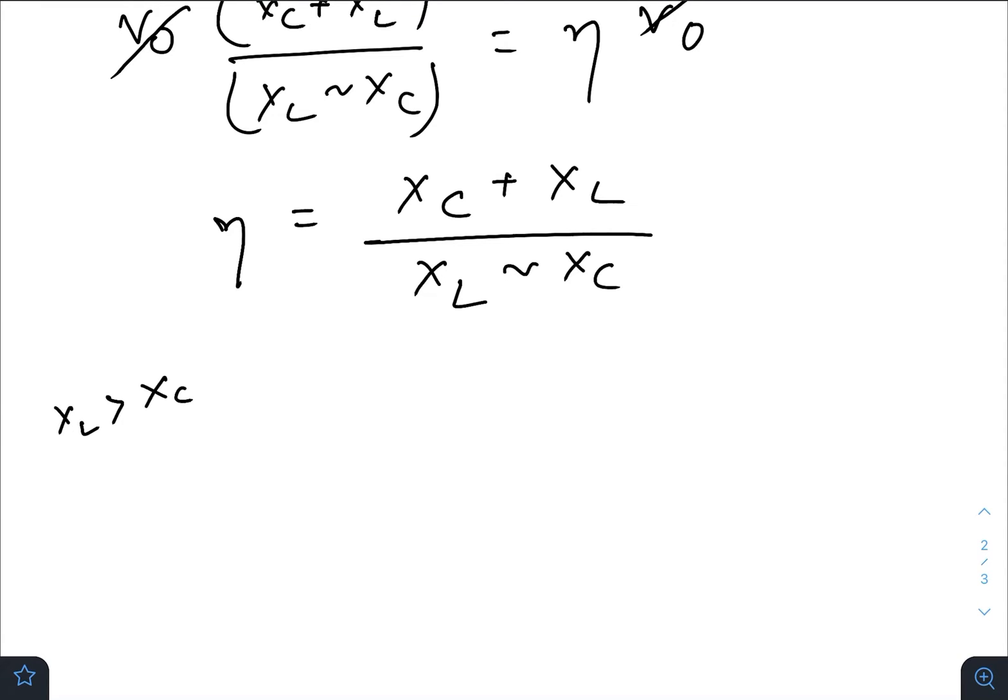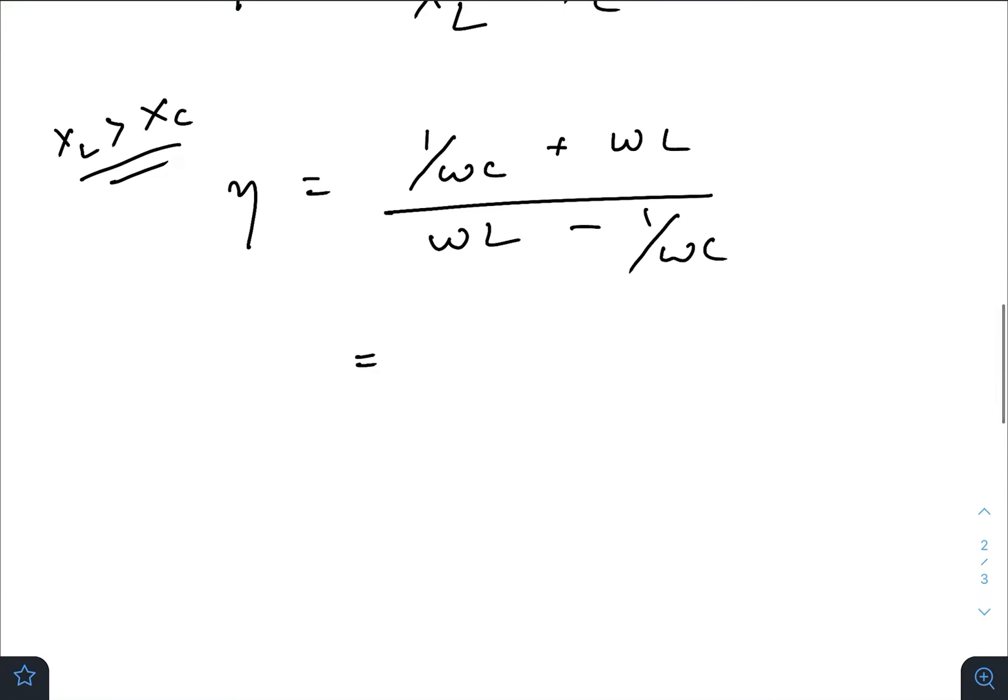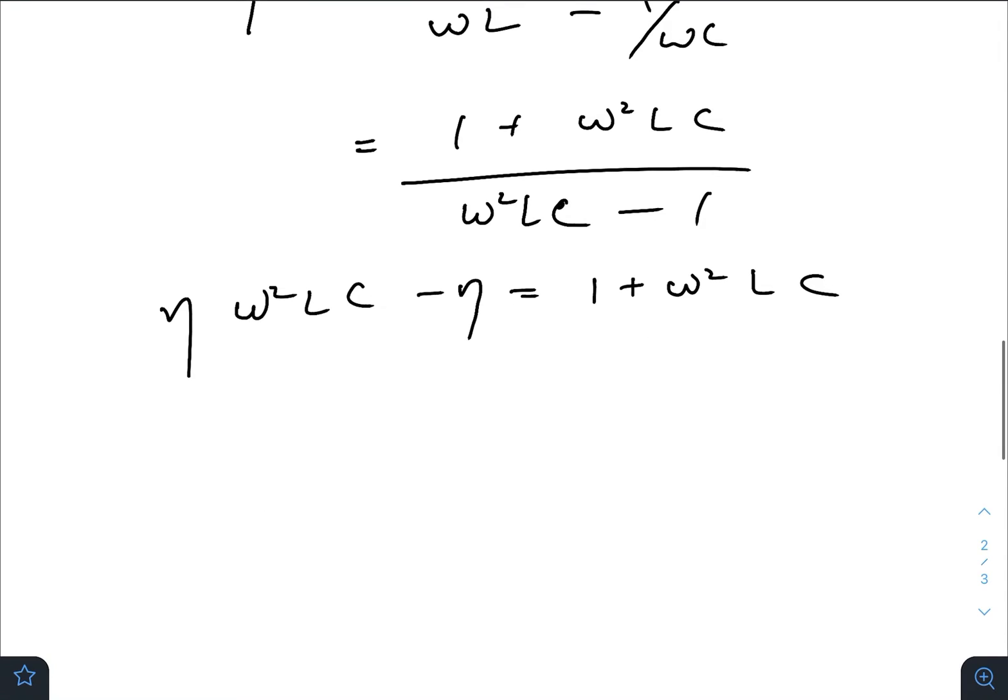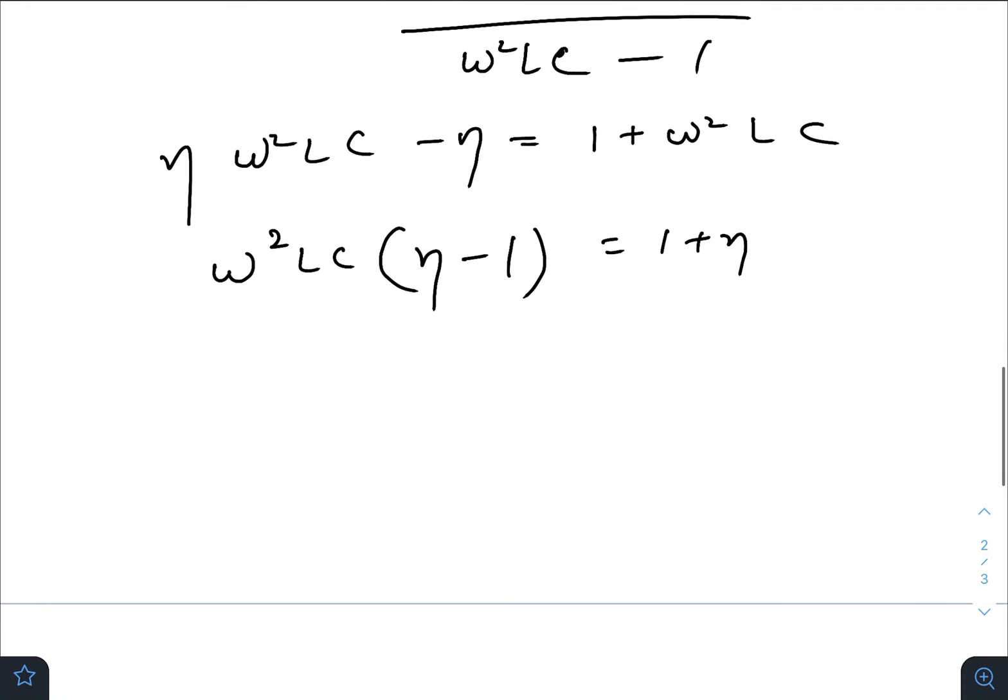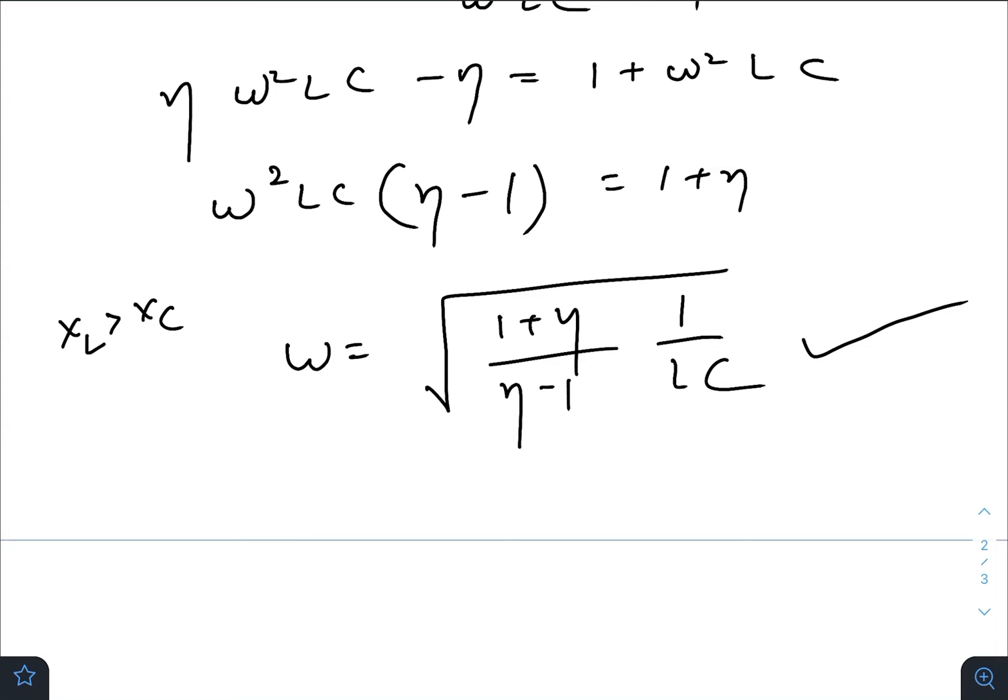Previously I have said that there will be two situations. One is XL greater than XC. XC is 1/(ωC), XL is ωL, so this becomes (1 + ω²LC)/(ω²LC - 1). So η(ω²LC) - η equals 1 + ω²LC. Taking ω²LC common: η - 1 equals 1 + η. So for XL greater than XC, we have ω equals √[(1+η)/(η-1)] · 1/√(LC).